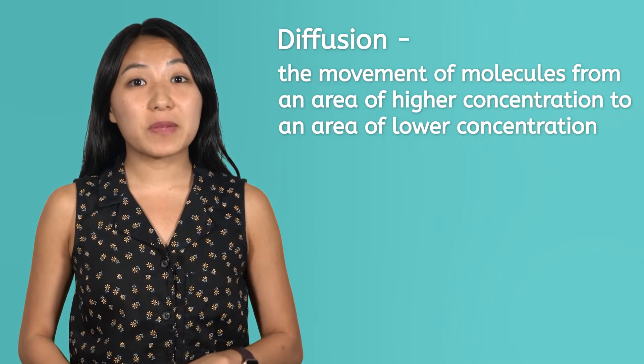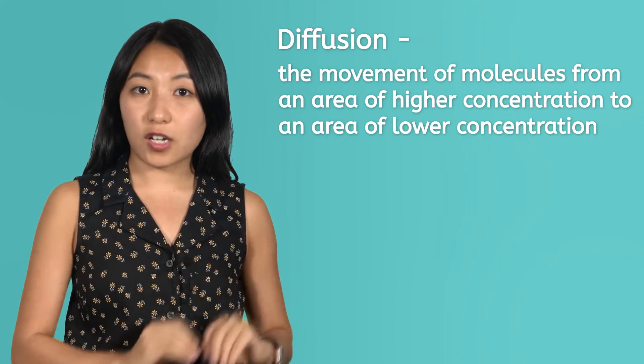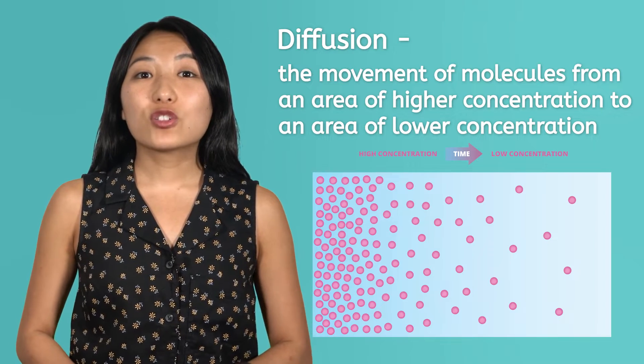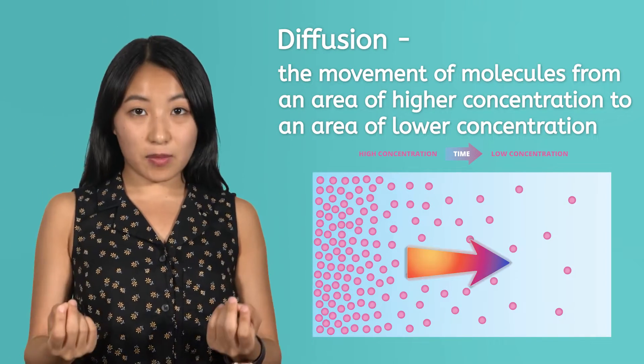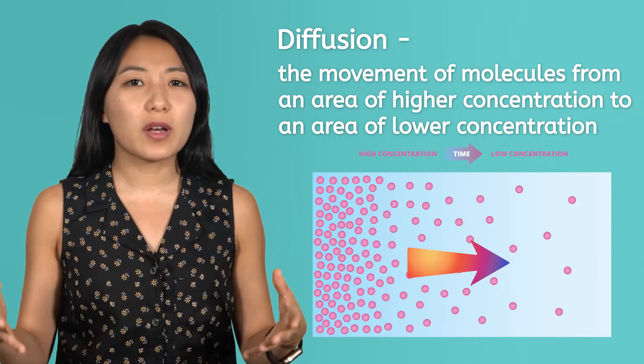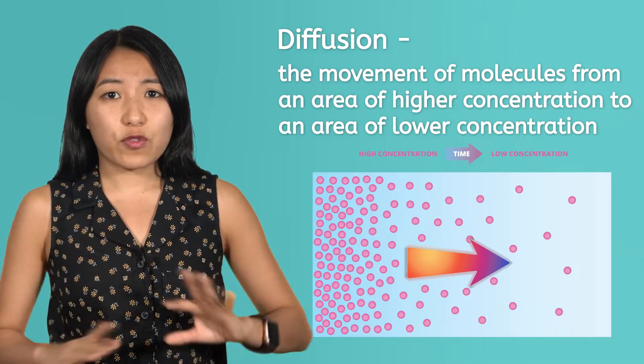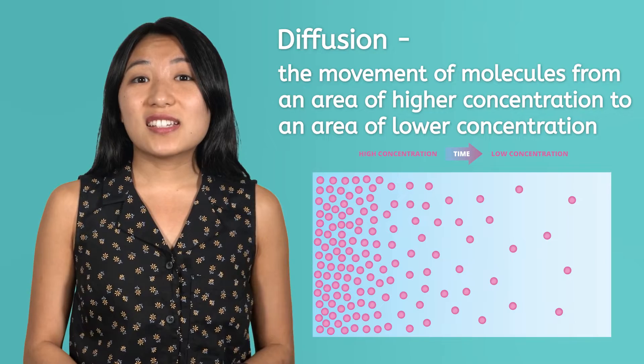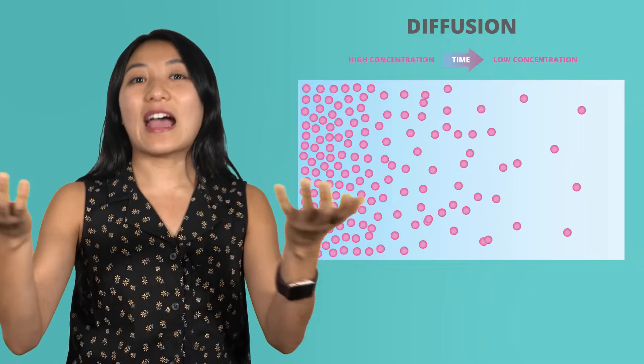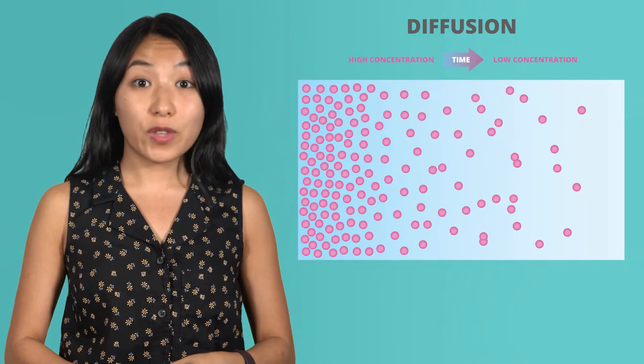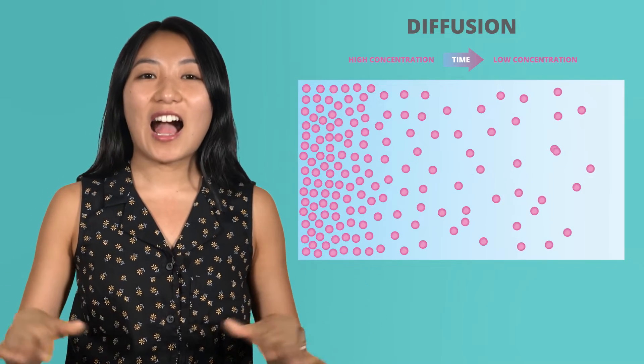Diffusion is the movement of molecules from an area of higher concentration to an area of lower concentration. Simply put, molecules want to go from where there are more molecules to where there are less molecules. You can think of this as individual molecules disliking crowds and preferring to spread out if they can. Diffusion is happening everywhere, all the time. For example, let's say I have company coming over and I want to freshen my place up. I spritz a little air freshener here, a little there. When I spray the air freshener, there is initially a high concentration where I've sprayed. However, over time, the molecules will naturally spread out to where there are fewer air freshener molecules, until they are distributed evenly across the entire space.